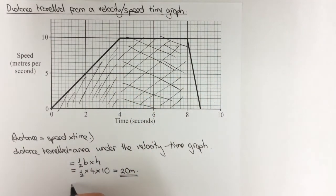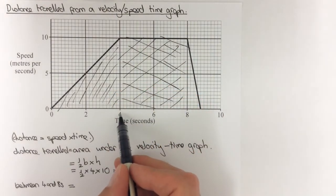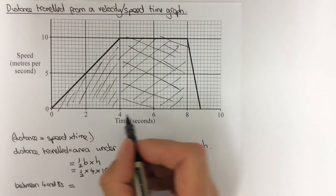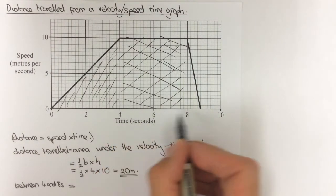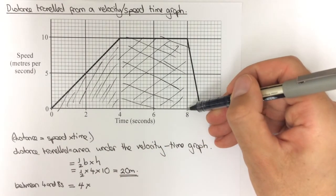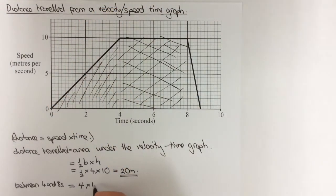So the distance travelled between four and eight seconds, because that's a rectangle, we would just do one side multiplied by the other, which would be this side which goes from four to eight so it's four long, times the height which is ten.